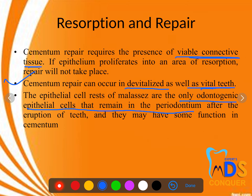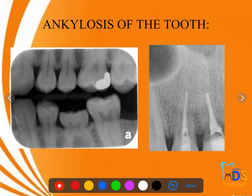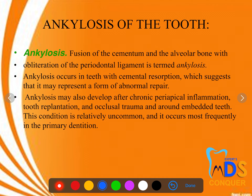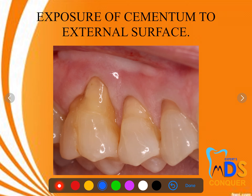The epithelial cell rests of Malassez are the only odontogenic epithelium that remain in the periodontium. Recent developments in regeneration of cementum are mainly based on this particular cell. On a radiograph, an ankylosed tooth shows no demarcation, illustrating how fusion of cementum and alveolar bone — ankylosis — appears radiographically and affects extraction planning.